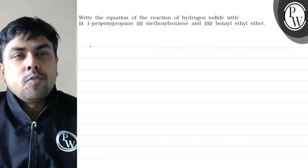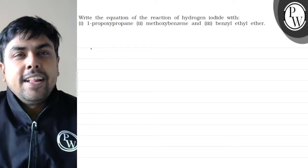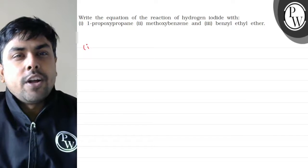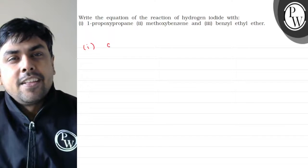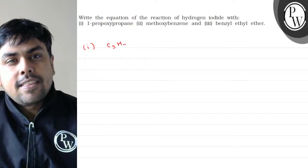First, I have 1-propoxypropane. Let's write the structure of 1-propoxypropane. Let's write C3H7.